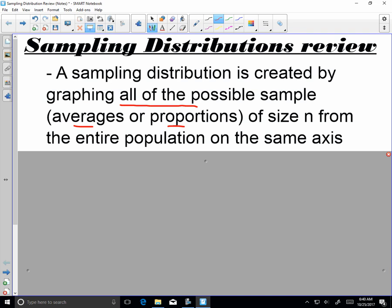It's always dependent on what type of data that we have. So all of the averages, all of the proportions of the same size, we need to know our sample size for the entire population on the same axis.